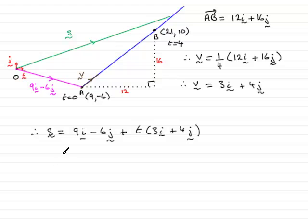What does that give us? Well, all we need to do is group up the I components and you can see we've got 3T here in the I direction. Group it up with the 9 and so we've got 3T plus 9 in the I direction.